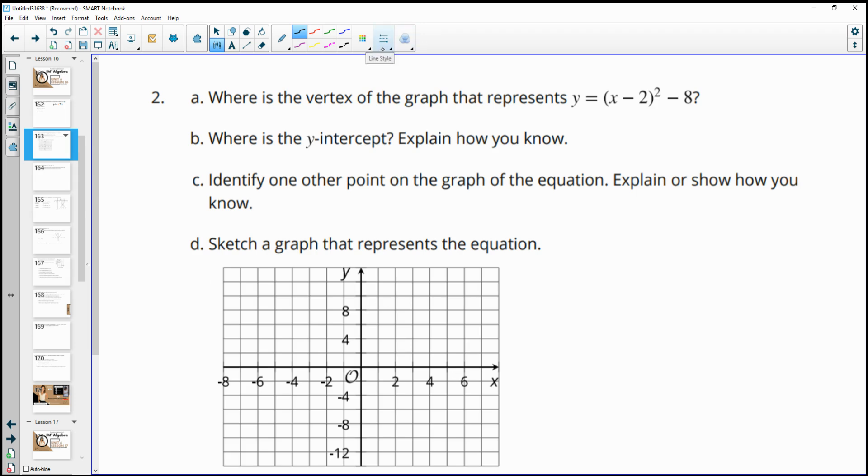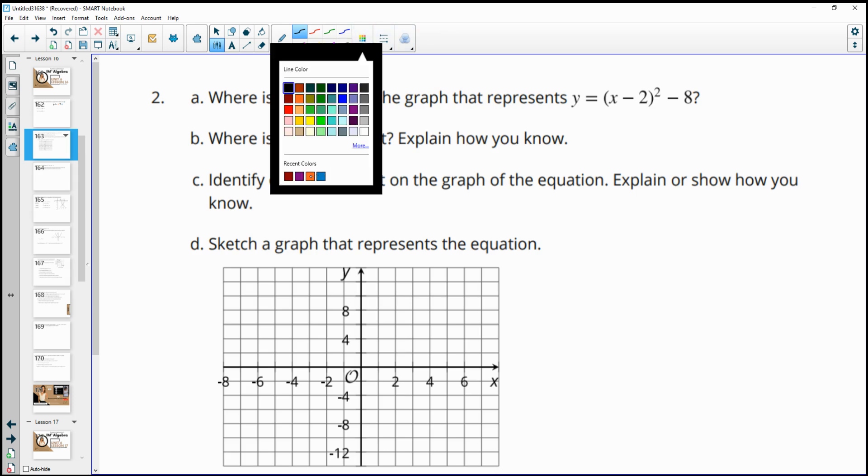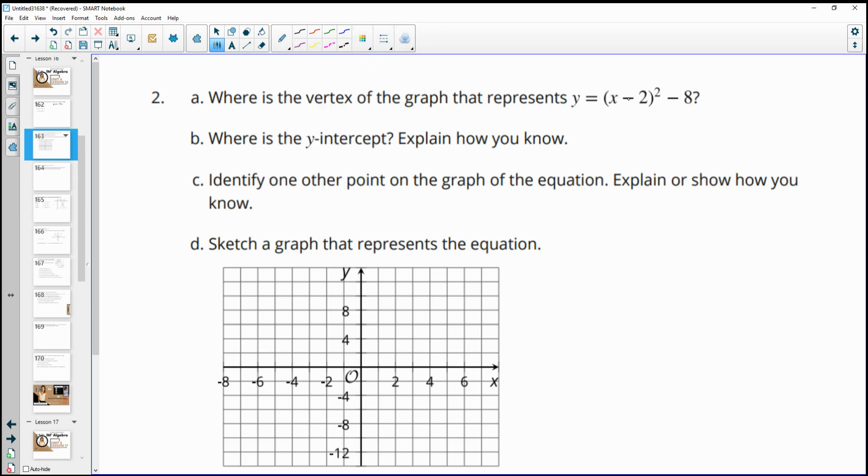Number two, where is the vertex of the graph represented by this equation? And so we can see that our x value is going to be 2. Because remember, it's going to say that it's going to look the opposite for that x value. So our x value is 2.